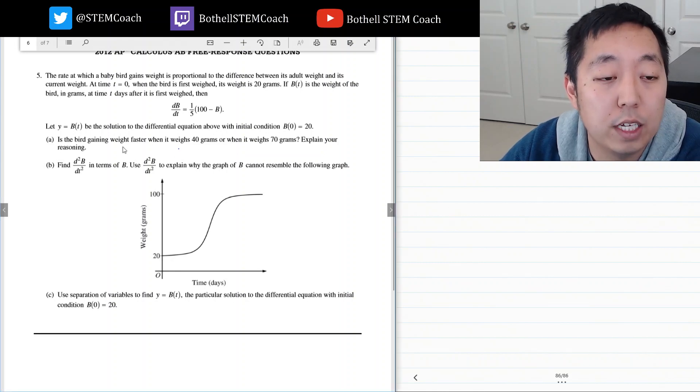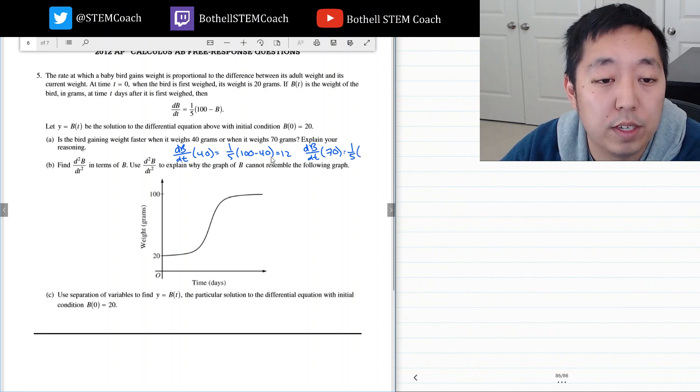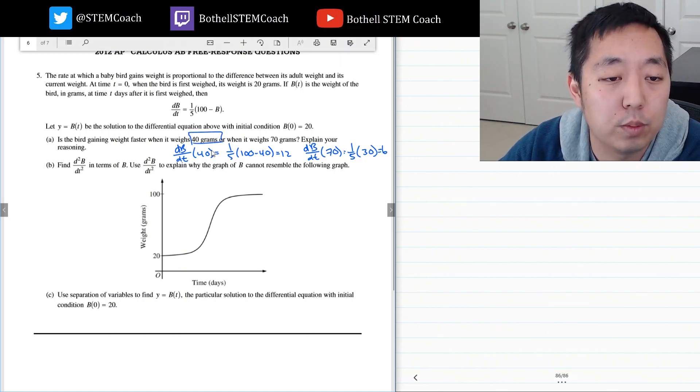Well, gaining weight is the rate of change, so I want to know what db/dt is. At 40, it's equal to one-fifth times 100 minus 40, that's 60 over 5, that's 12. And then db/dt at 70 is one-fifth times 100 minus 70, which is 30, which is 6.